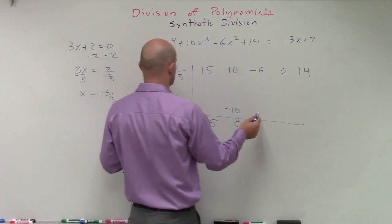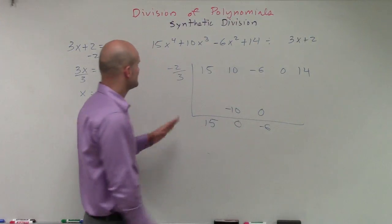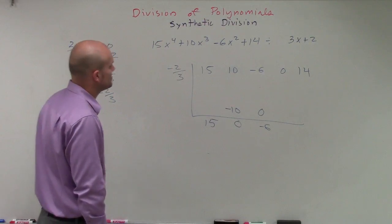0 times a negative 2 thirds is going to be 0. Negative 6 plus 0 is negative 6.